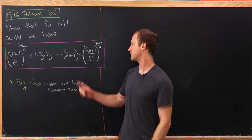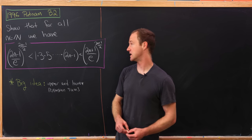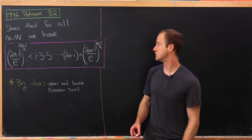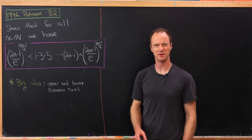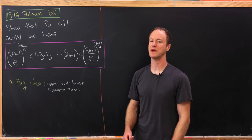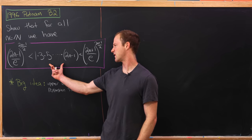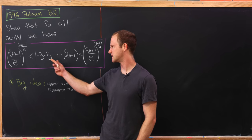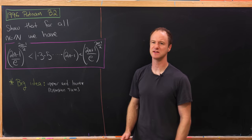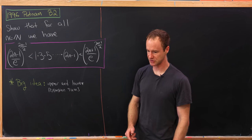And on the right-hand side, we've got 2n plus 1 over e, all raised to the 2n plus 1 over 2. So I think this is a pretty nice inequality that we have going on here, given that we've got this product of odd numbers and odd exponents and stuff like that. I guess odd exponents over 2.